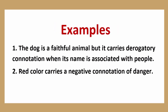Let's see some more examples. Our first example: the dog is a faithful animal, but it carries a derogatory connotation when its name is associated with people. The dog itself is a very faithful animal, but if you use this word to describe a person, the connotation becomes very derogatory — it means you are insulting that person.